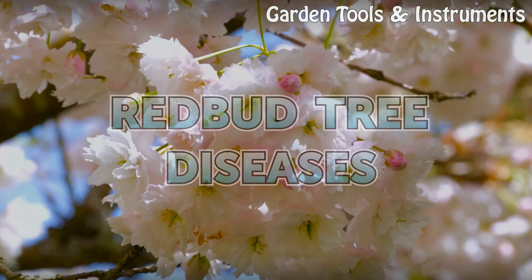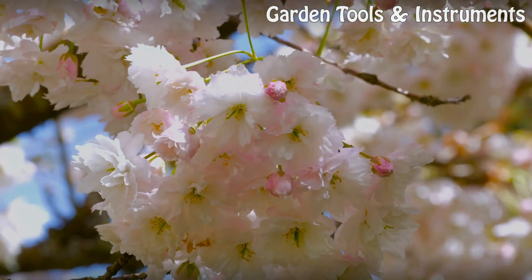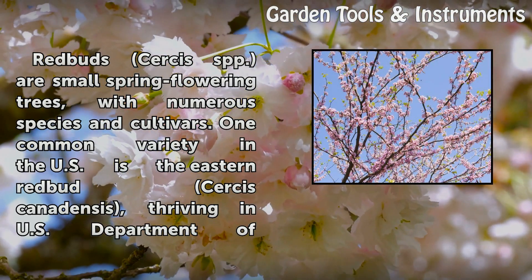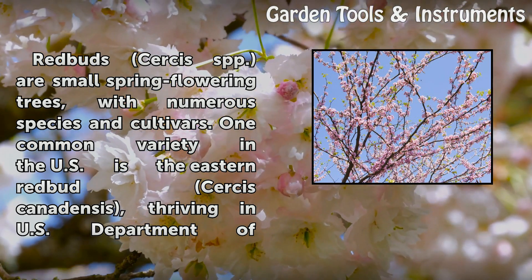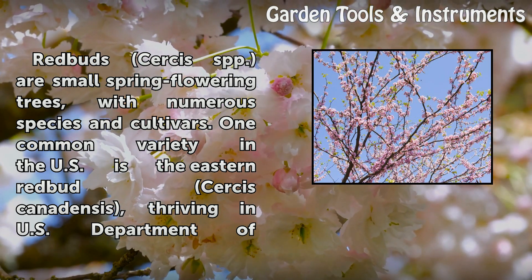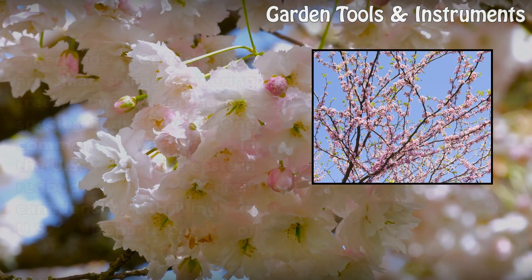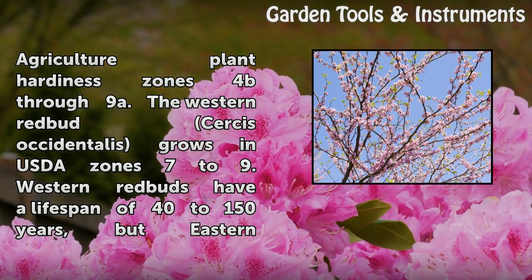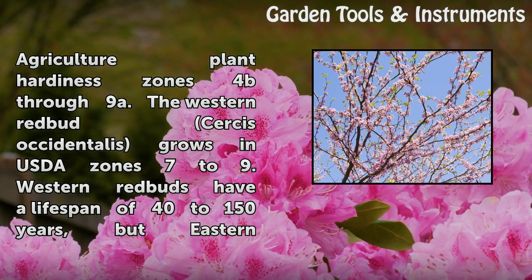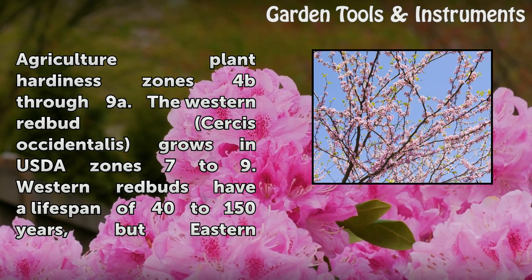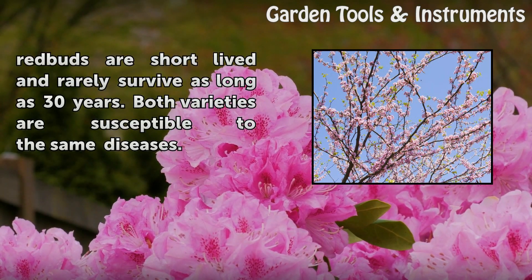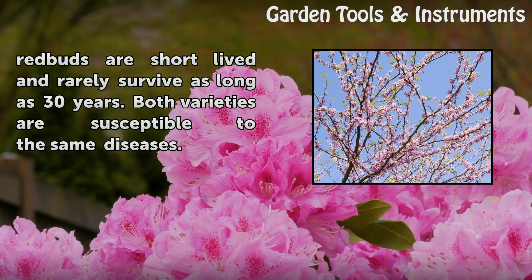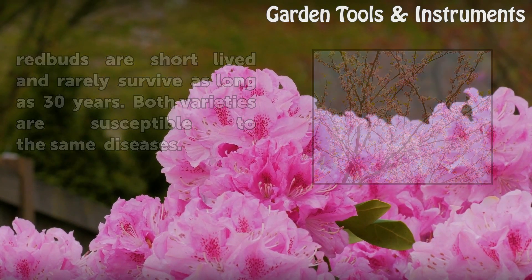Redbud Tree Diseases. Redbud Cercis spp. are small spring-flowering trees with numerous species and cultivars. One common variety in the U.S. is the Eastern Redbud Cercis canadensis, thriving in USDA Plant Hardiness zones 4B through 9A. The Western Redbud Cercis occidentalis grows in USDA zones 7 to 9. Western redbuds have a lifespan of 40 to 150 years, but Eastern redbuds are short-lived and rarely survive as long as 30 years. Both varieties are susceptible to the same diseases.